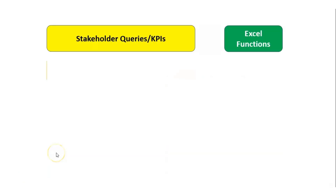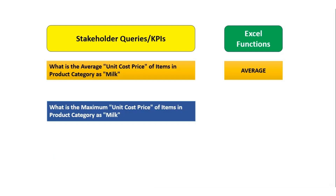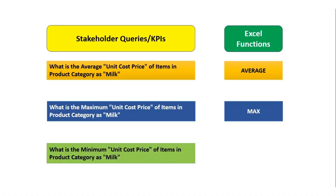Moving to the next query: what is the maximum unit cost price of the items in the product category as milk? The stakeholder wants to understand, in the given data for the product category milk, what is the maximum unit cost price? Similarly, the stakeholder also wants to understand what is the minimum unit cost price of the items in the product category as milk. We will try to find the answers using the Excel functions AVERAGE, MIN, and MAX.